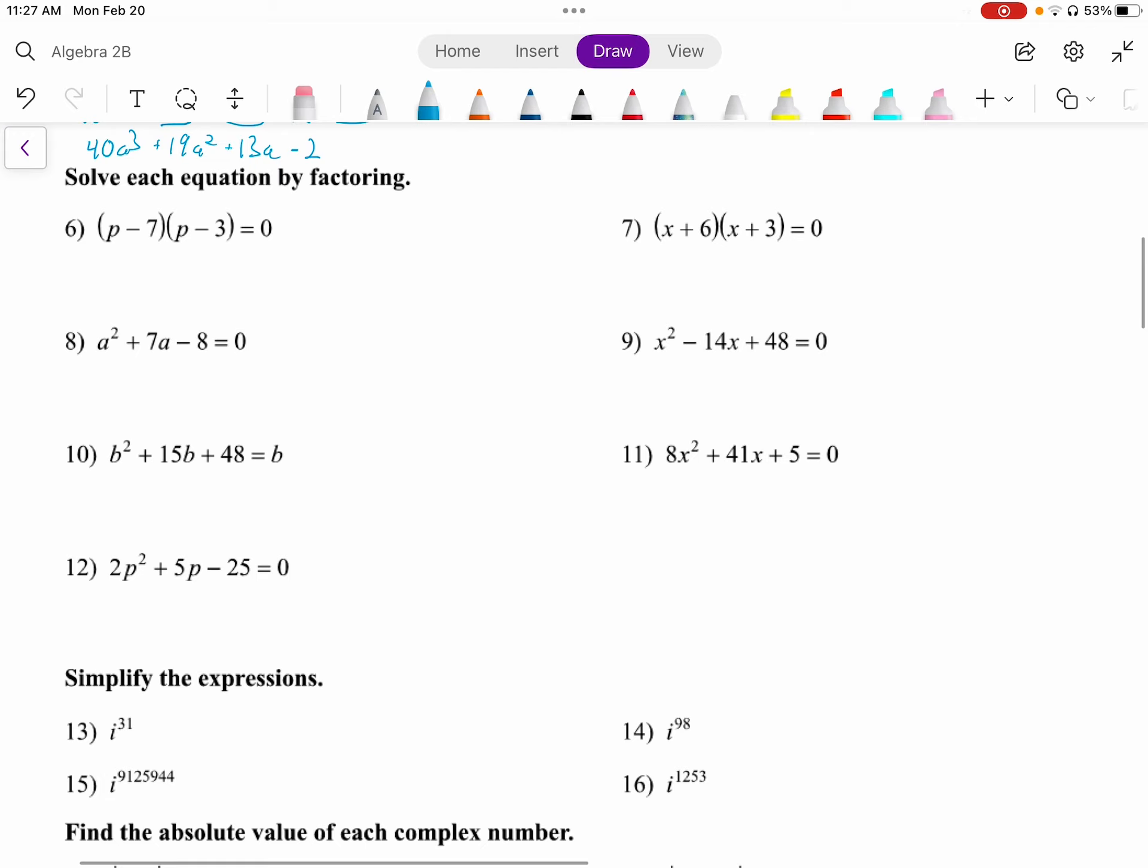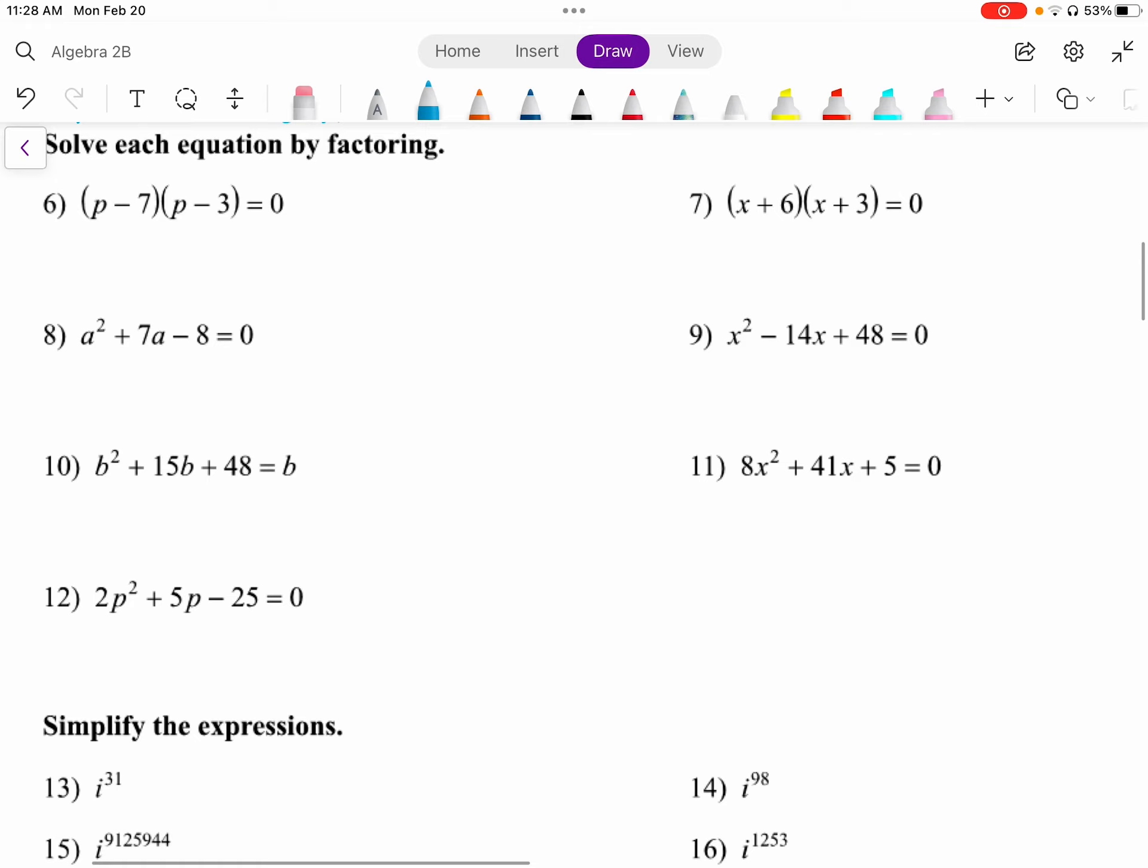Next group of questions say solve by factoring. And the first two, these are actually already factored for us. So we don't have to do any factoring. And what we do is remember the zero property of multiplication, that if two things multiply together to equal zero, one of those things has to be equal to zero. So either p minus 7 equals zero, or p minus 3 equals zero. On this left one, we add 7 to both sides, and we get p equals 7, or p equals 3. And we can write our solution set as 3 comma 7.